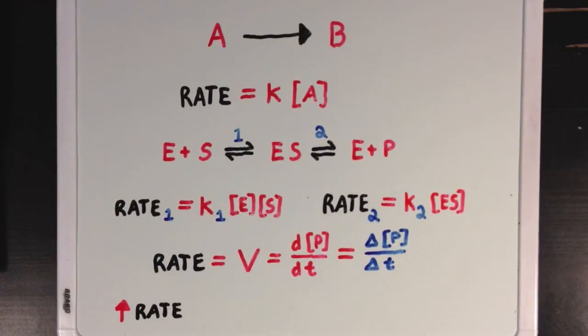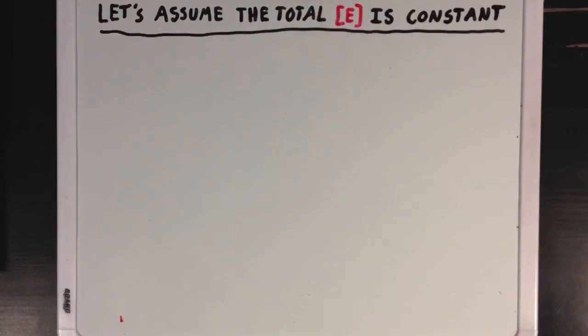To increase the rate that we get new product, we could do this by either increasing the substrate concentration or by increasing the enzyme concentration, since we're going to assume that the K value is constant and can't be changed. When we think about enzyme kinetics, we like to assume that we're in a situation where the total concentration of enzyme is constant, and this is generally the case when we're looking at enzymes working in different cells.